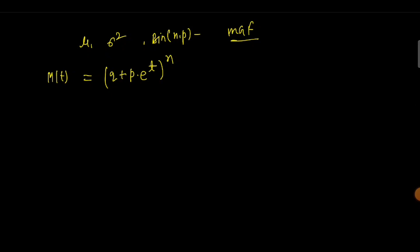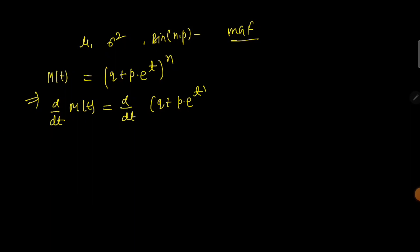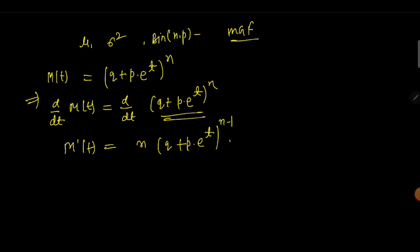Now if we take the derivative of this with respect to t, we're going to get d/dt of M(t) equals d/dt of (q + p·e^t)^n. Taking the first derivative M'(t), we get n·(q + p·e^t)^(n−1), and then d/dt of the inner term — the q gives 0, leaving p·e^t.